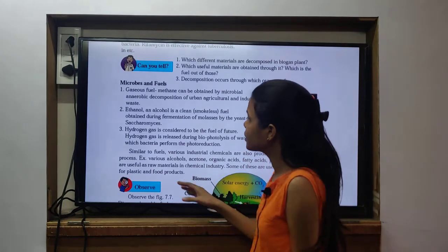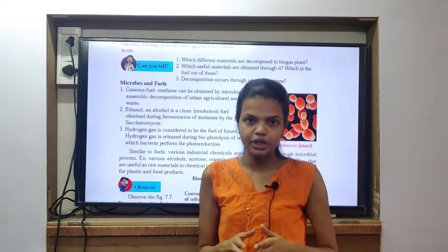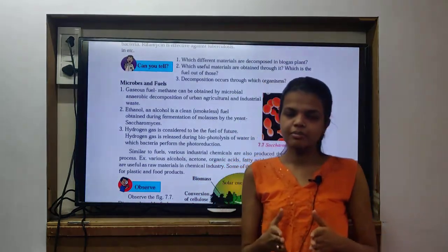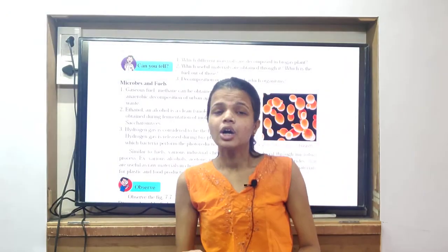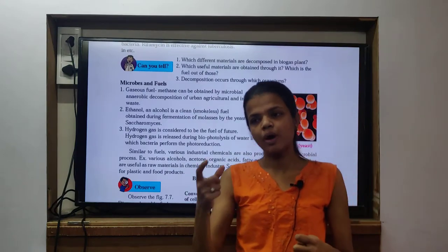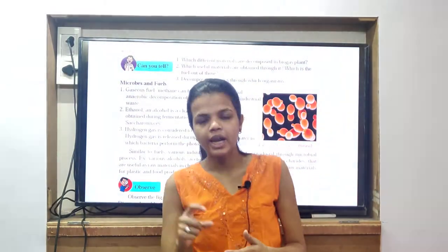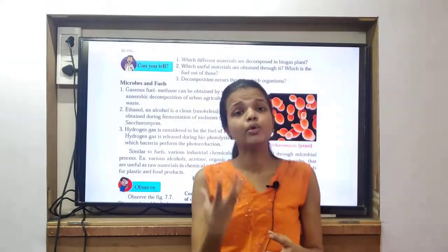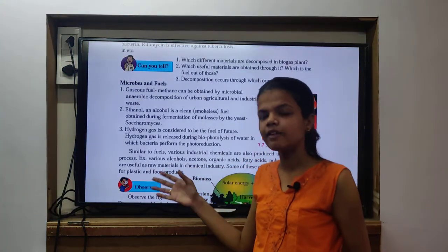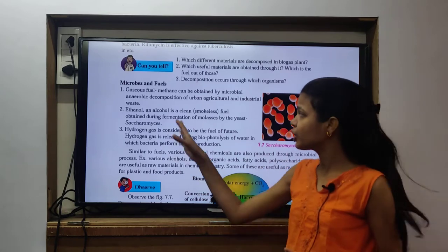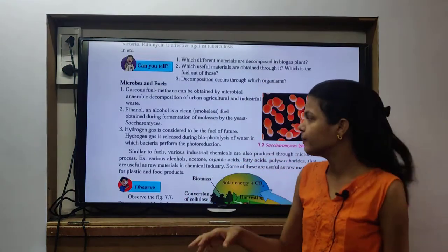Now coming to ethanol. You studied this in 9th class when you studied wine production. In wine production you saw that molasses was used and ethanol was produced. That's why the government had a rule that you have to add ethanol to your petrol, because it is a smokeless fuel - a blue flame comes, not a yellow flame. To control pollution, the government gave an order that you have to add ethanol to petrol and all.